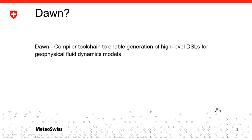Dawn is a compiler — actually a toolchain, since we subdivided it into different components. The aim of Dawn is to enable generation of high-level DSL code. We mainly focus on weather and climate, but the domain we can support is a bit broader; it can be categorized as geophysical fluid dynamics models. What Dawn does is take this high-level DSL and translate it into low-level code — C++, CUDA — and this low-level code needs to perform well on a particular architecture or set of architectures.